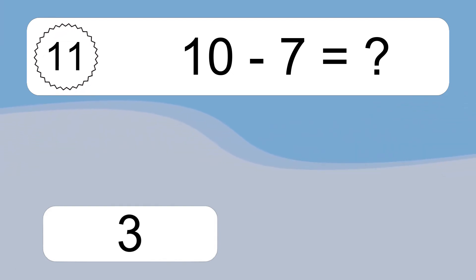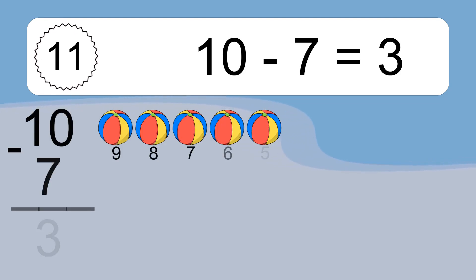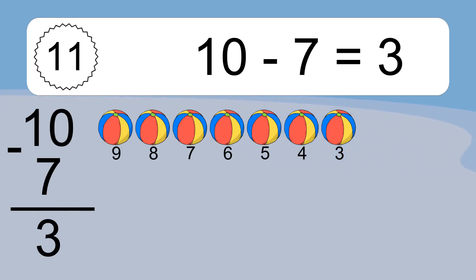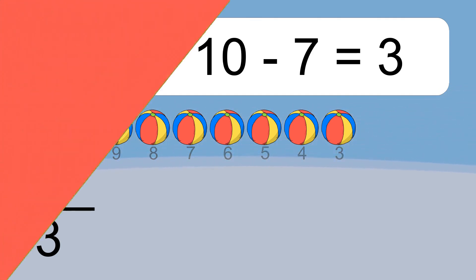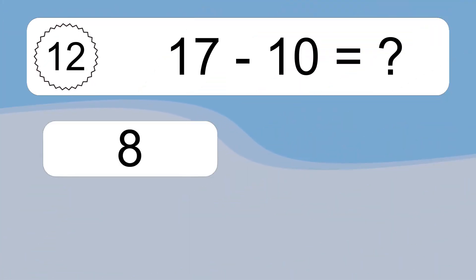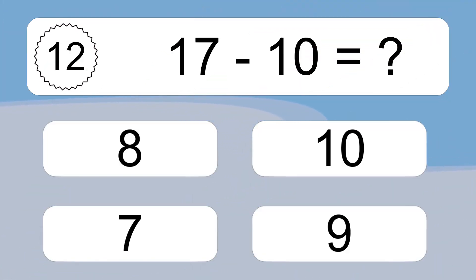10 minus 7 equals what? 10 minus 7 equals 3. Let's count it: 9, 8, 7, 6, 5, 4, 3.